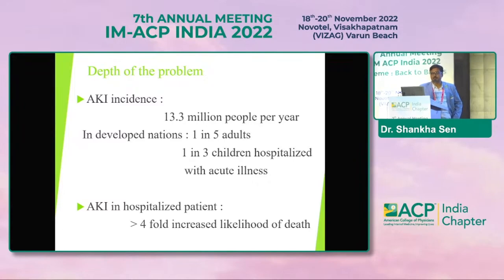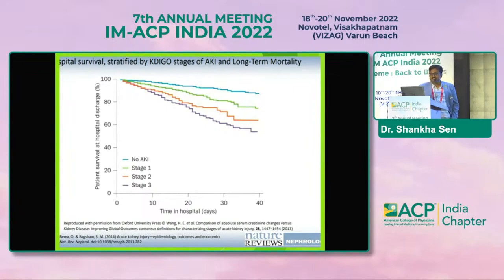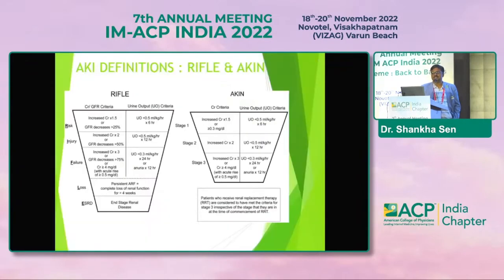AKI is quite different from chronic kidney disease, and hospital survival rates are also quite impacted in patients who have higher stages of acute kidney injury — from no AKI to stage 1 to stage 2 or stage 3.